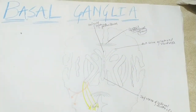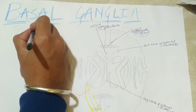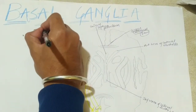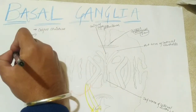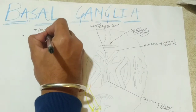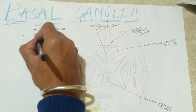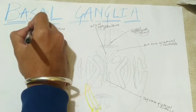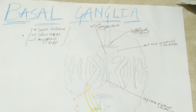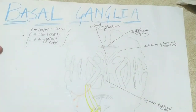Now let's start with the three parts of the basal ganglia. The basal ganglia actually has three parts: corpus striatum, claustrum, and amygdaloid body. We will discuss each one by one with labeling and in detail in the horizontal section. So first, corpus striatum.